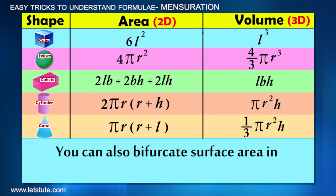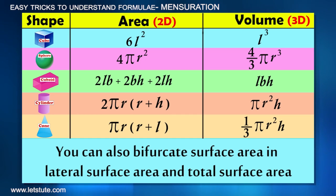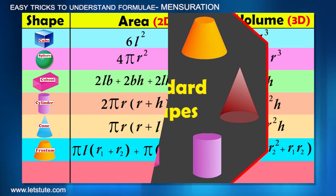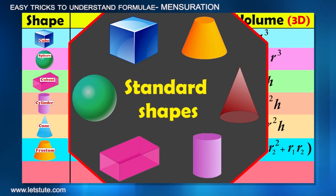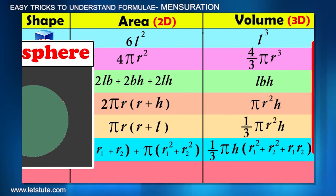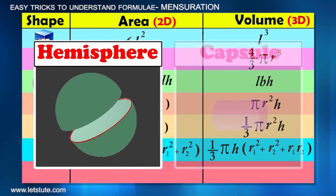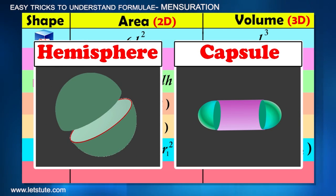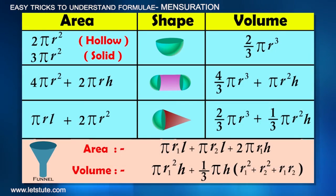You can also bifurcate surface area into lateral surface area and total surface area. So guys, this is all about the standard shapes, but questions could also be asked by modifying these shapes, like cutting or combining them. For example, a hemisphere or a capsule. Even at that time, you must be able to use the right formulas and of course logic.